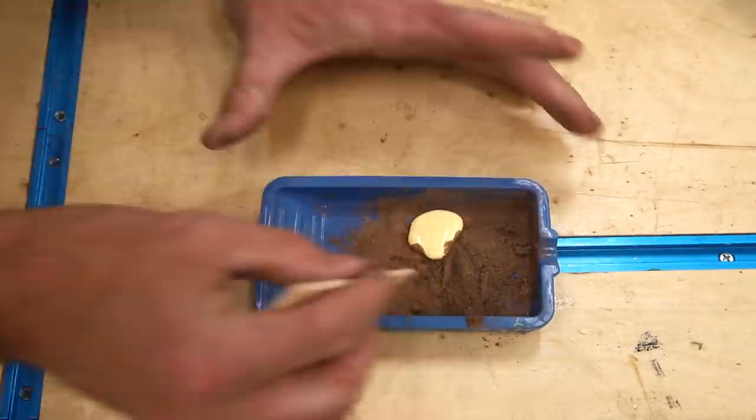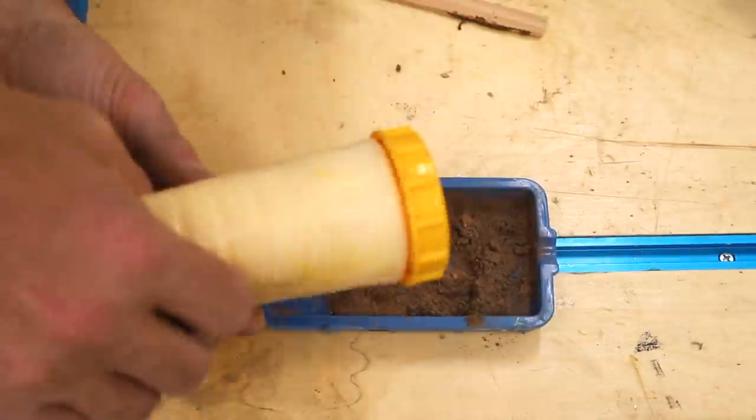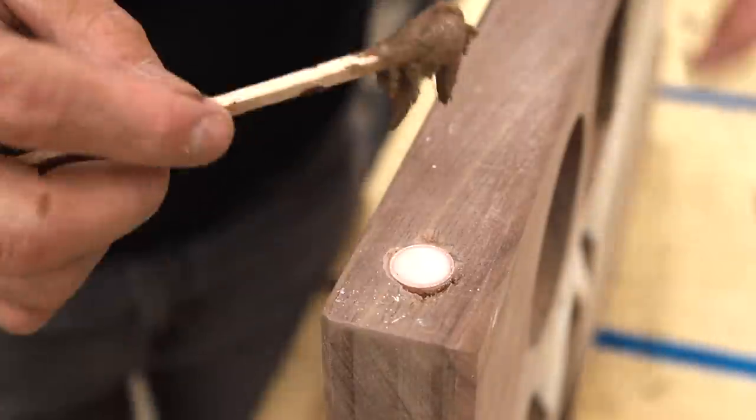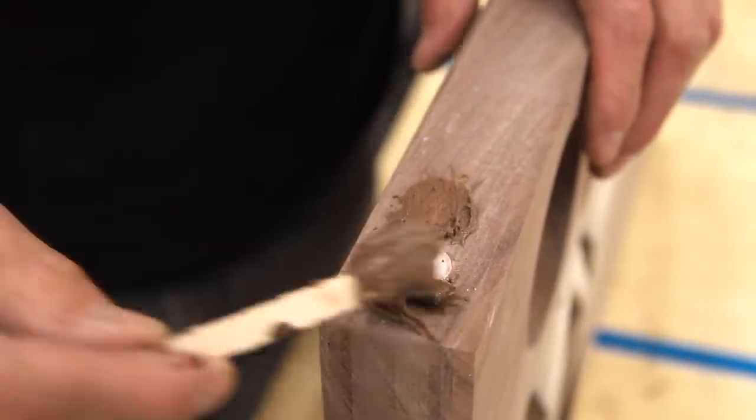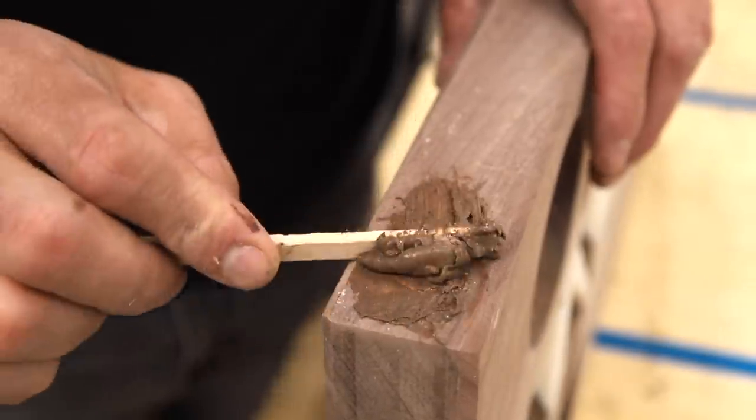I still had to address the tear out from the drill bit so I added some wood glue to this walnut sawdust and mixed that up into a paste. This is going to fill those voids but unfortunately it's not going to completely hide the tear out that I had.